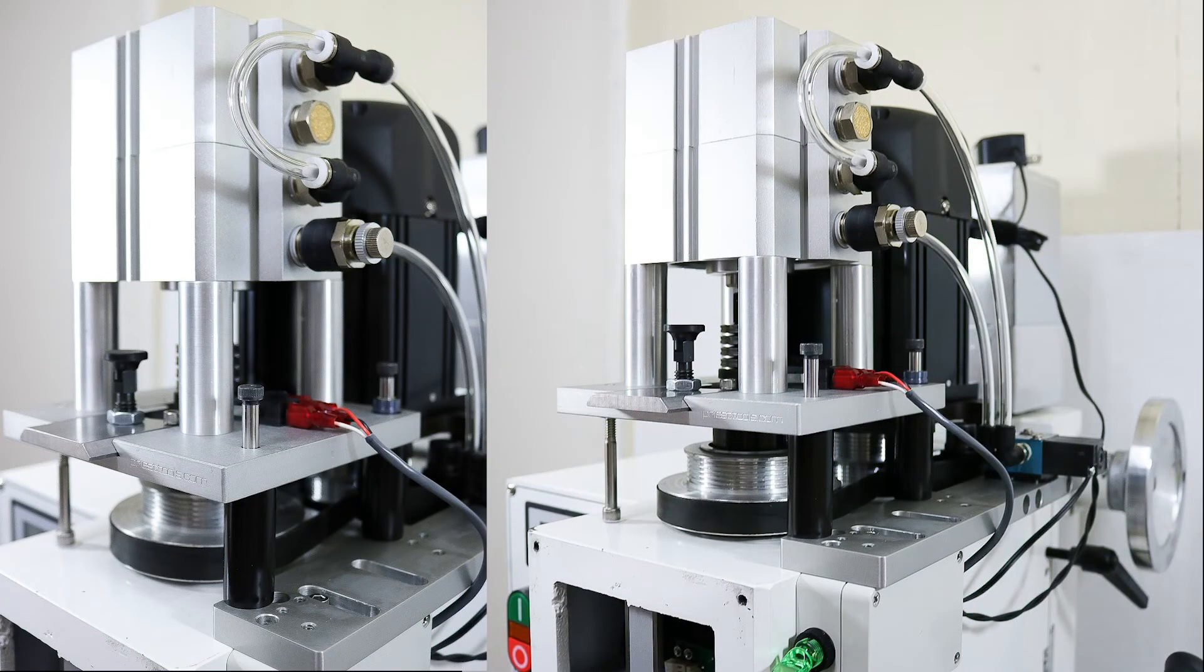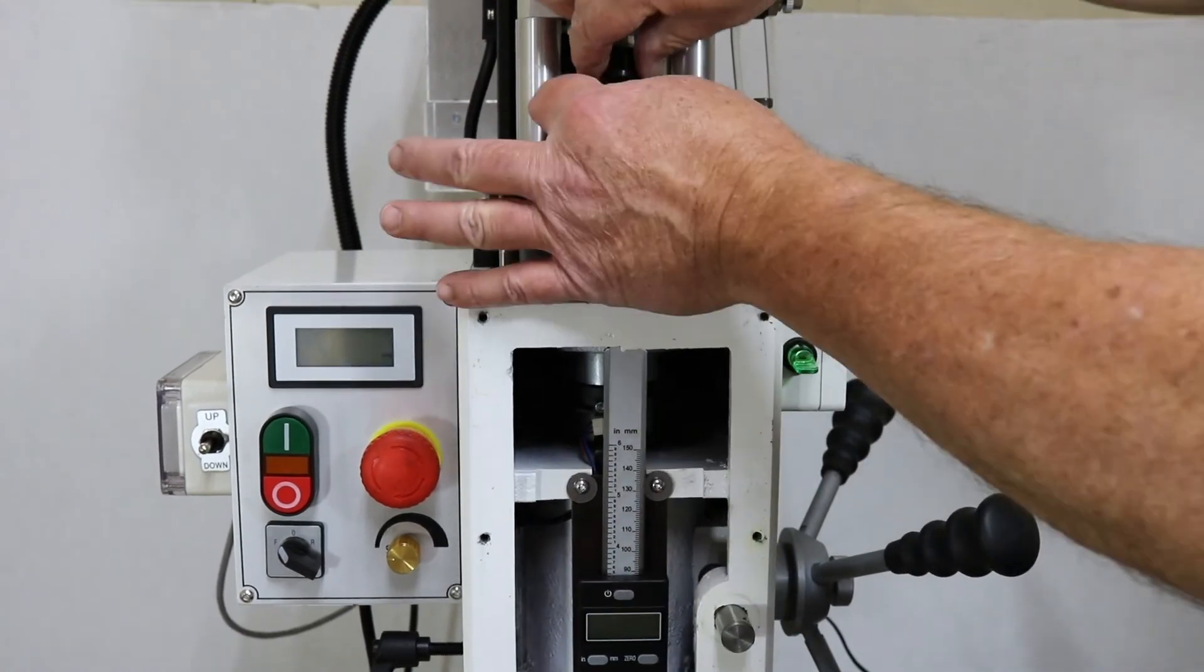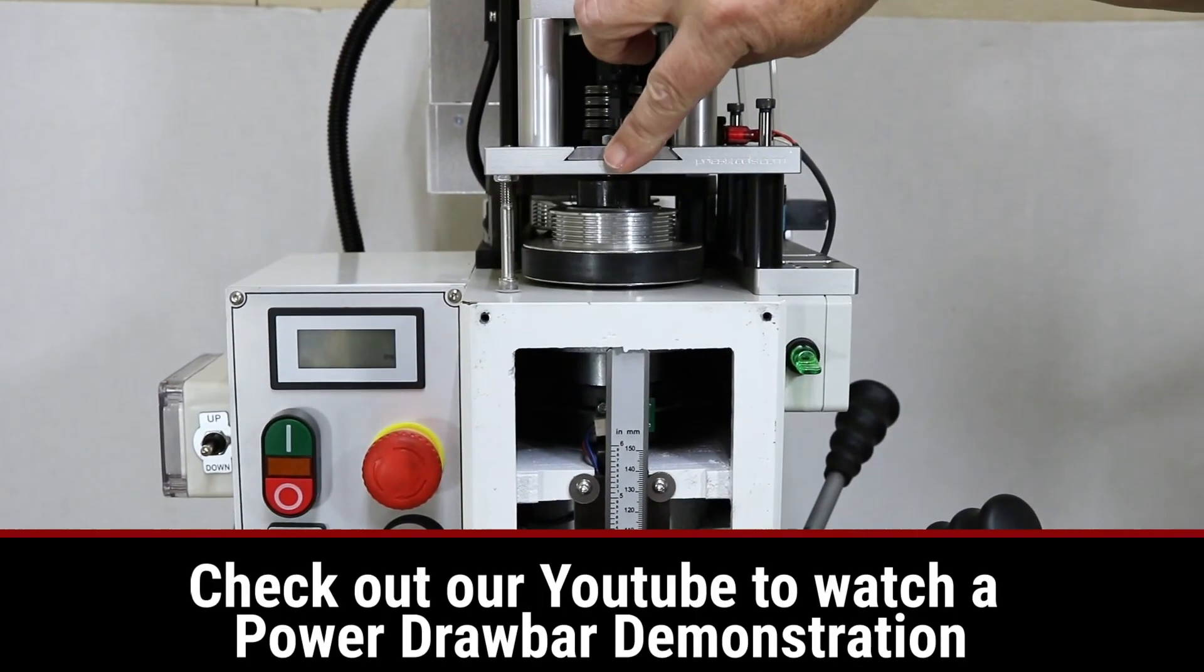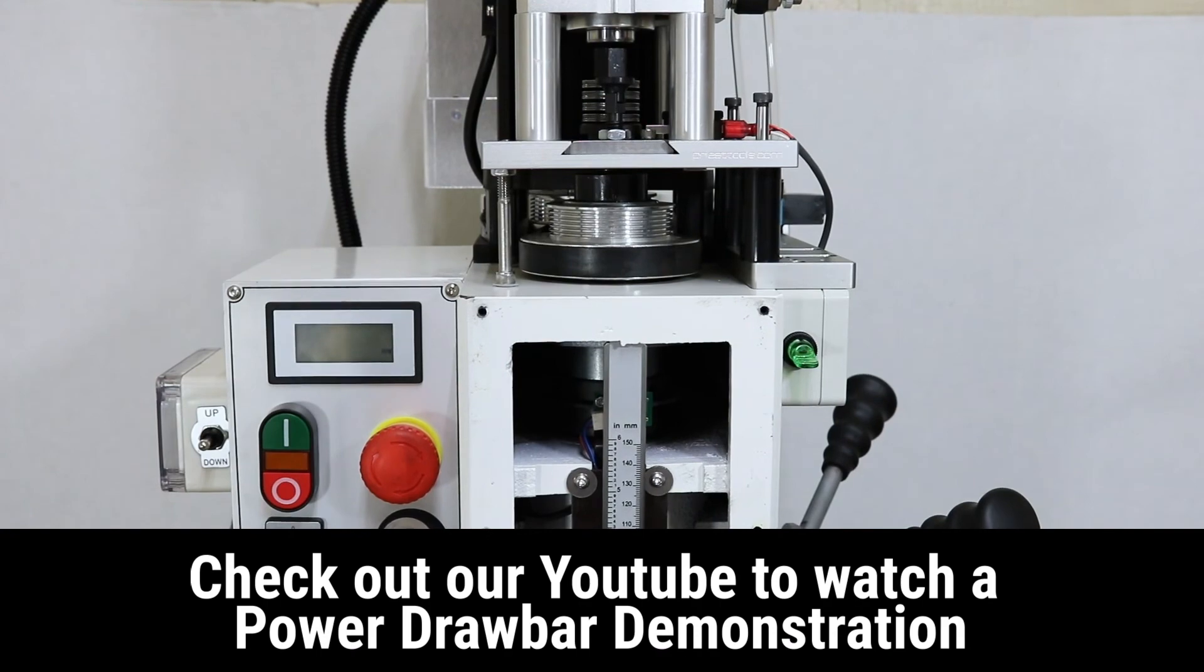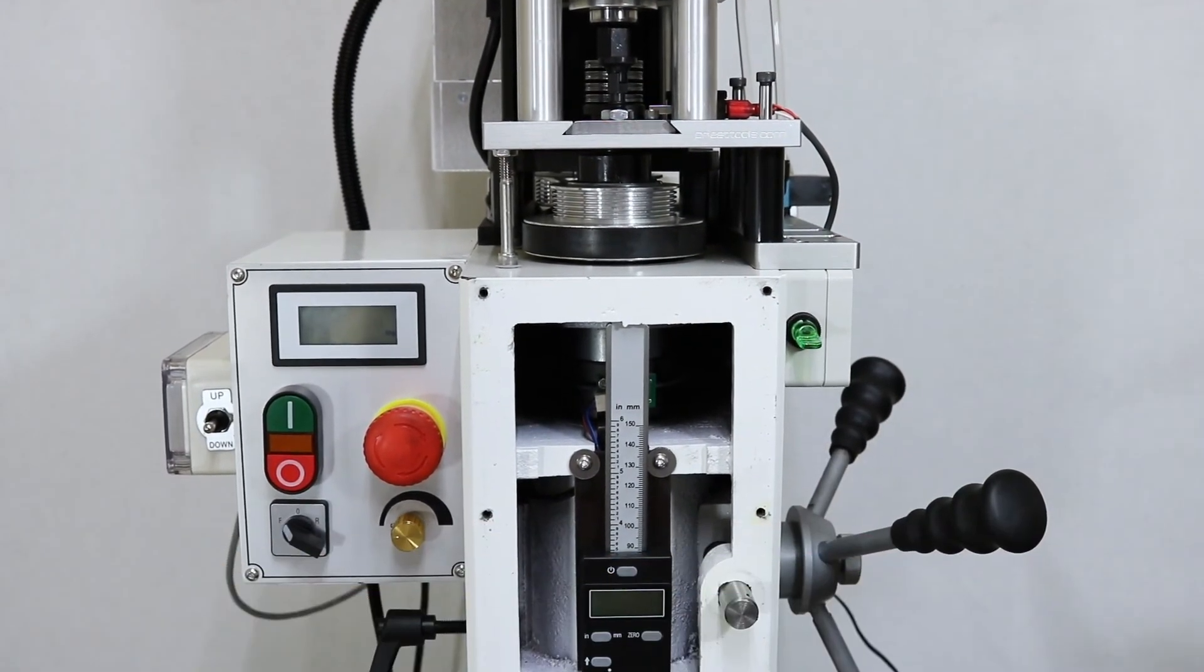To operate the power drawbar, lift the spring plunger, slide the plate back, and re-engage the spring plunger until it clicks into place. The contact switch cuts power to the mill and the power drawbar is now ready to be used.